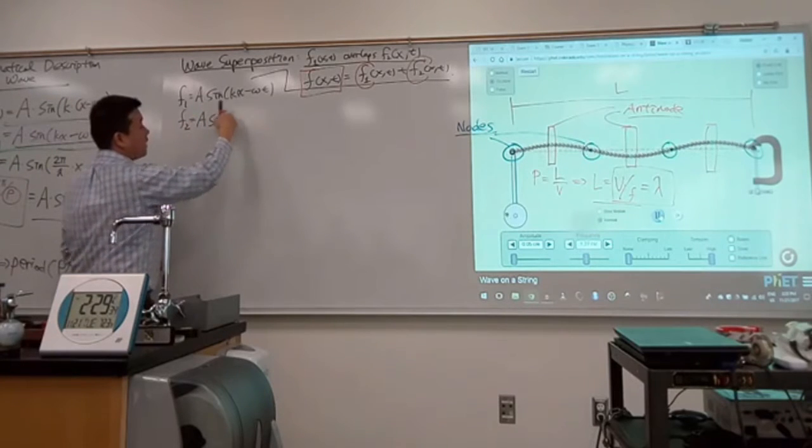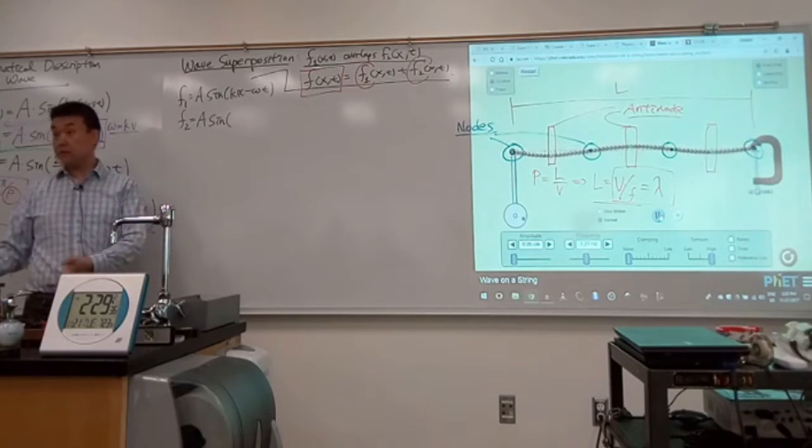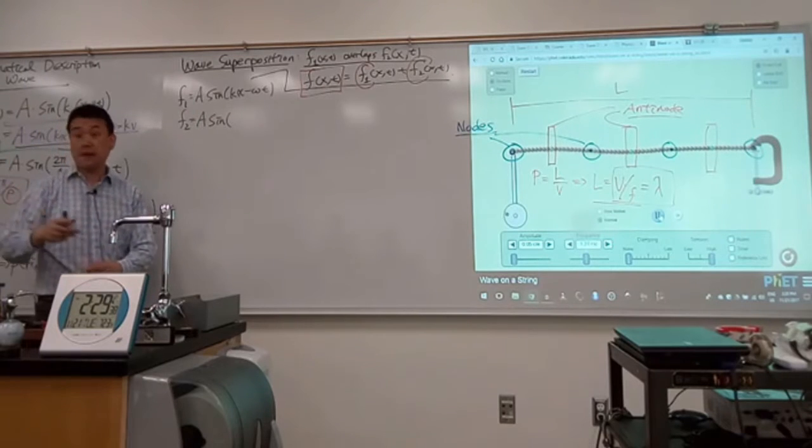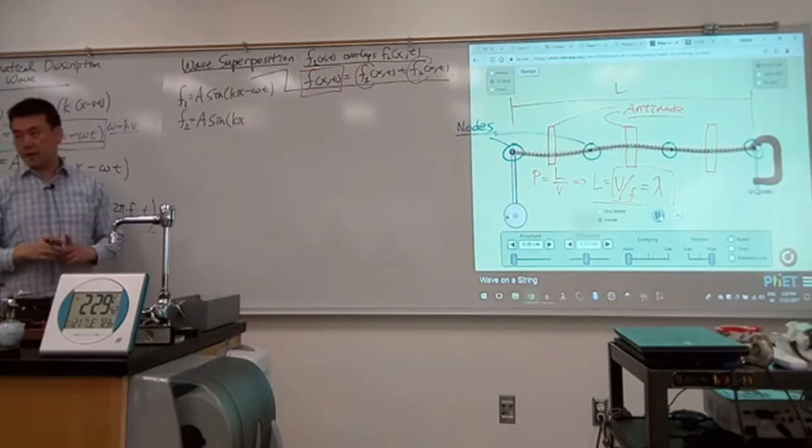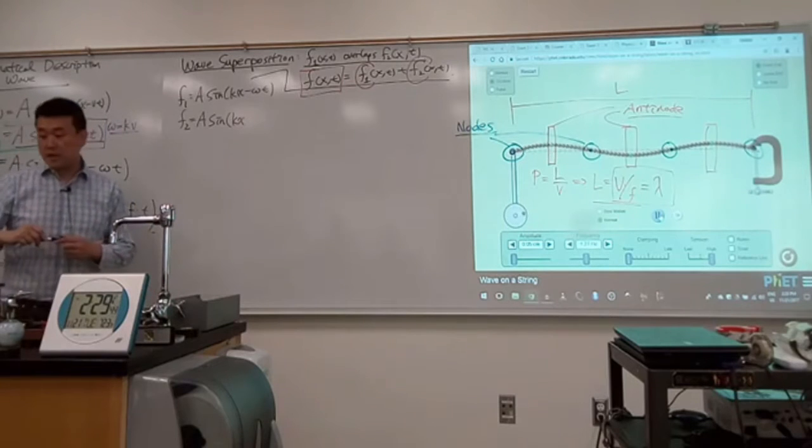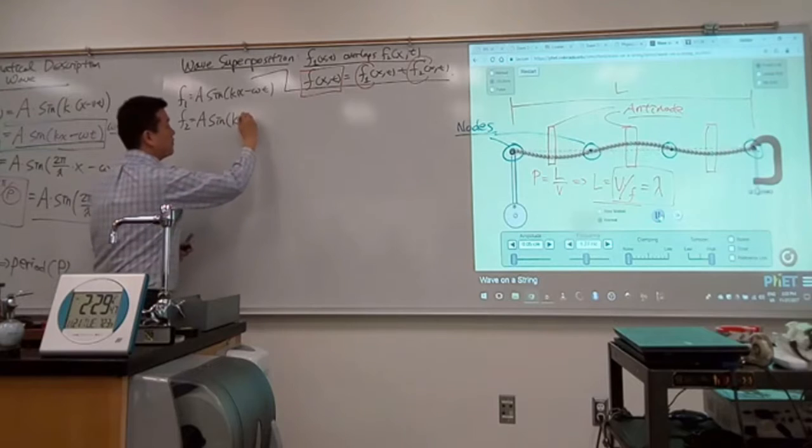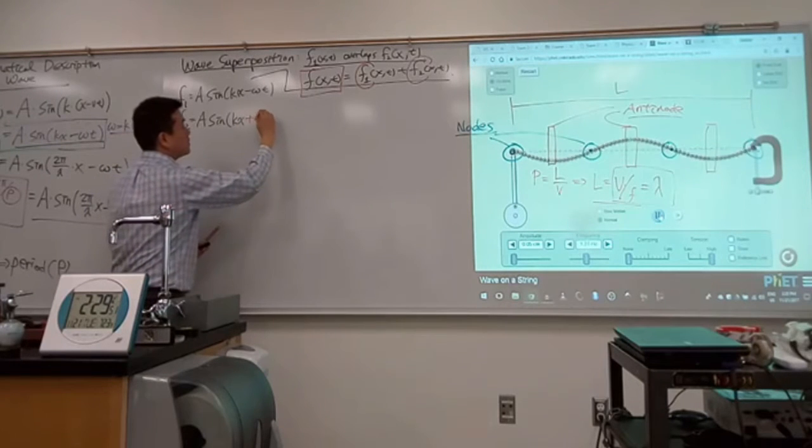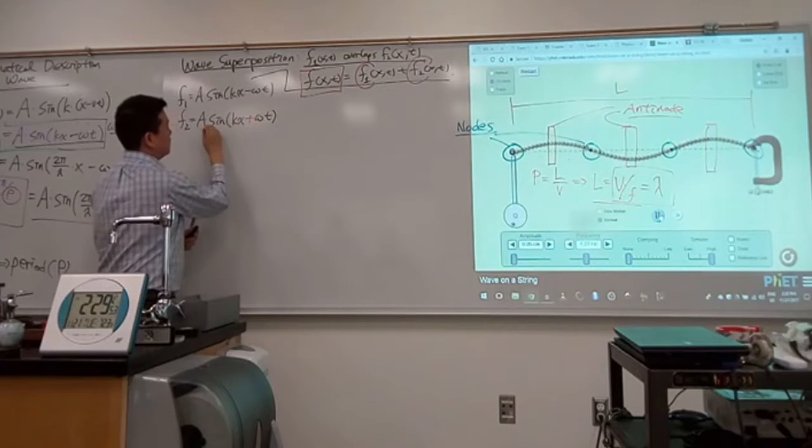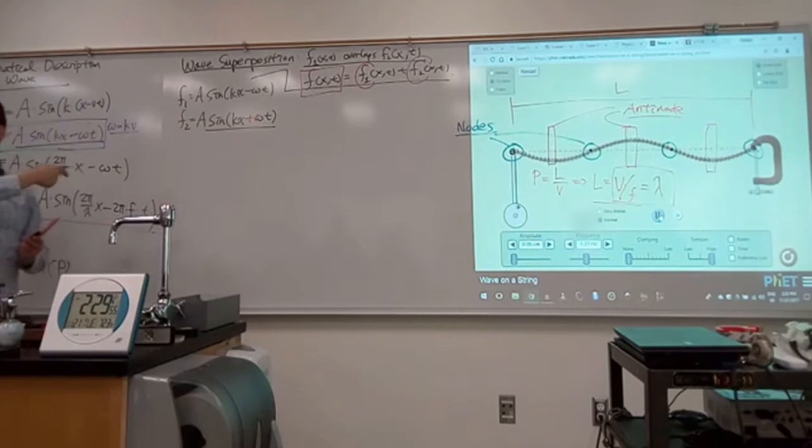So sine of k, I can keep the same wavelength because the frequency of oscillation is the same, so it'll be the same kx. And this is the part that's going to be different. Instead of being minus omega t, it's going to be plus omega t, which will be, so this describes a wave that's traveling from right to left. Do you see that?